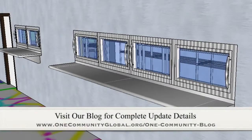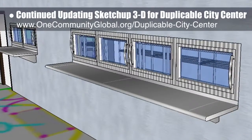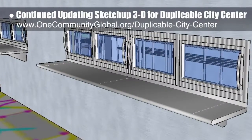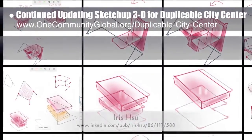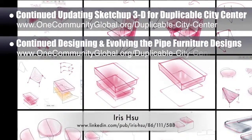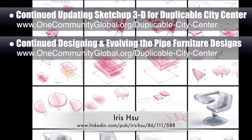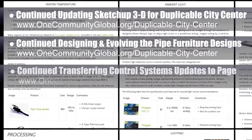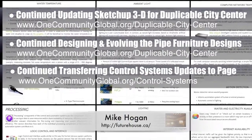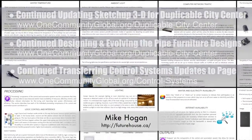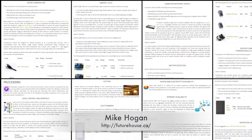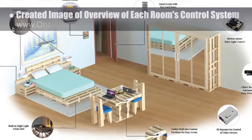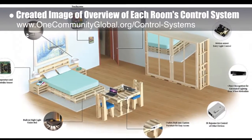This week the core team continued updating the SketchUp 3D model for the duplicable city center, redoing the dining dome, walk-in freezer, and refrigerator access windows — we're now about 57 percent done with the complete 3D update. Iris Su, industrial designer, continued designing the pipe furniture, with third-generation concept designs for chairs and tables for the city center library. We also continued transferring and editing updates from Mike Hogan, automation systems developer and business systems consultant, to the control systems automation page — about 60 percent complete with the total page redesign, including a new header image showing each room's control systems.